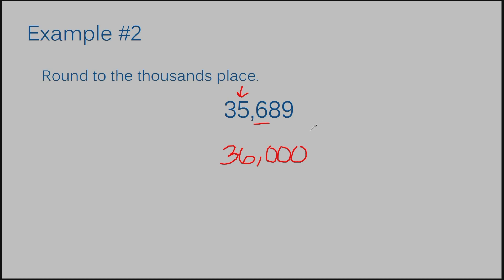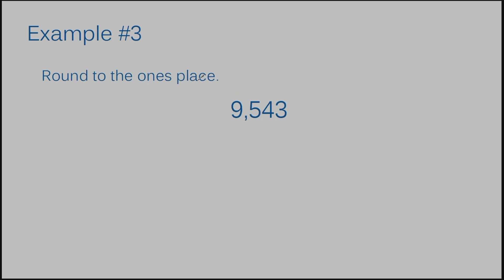Example number 3: round to the ones place. The ones place is the last digit when dealing with whole numbers. The rule is to check the space to the right — but there's nothing there. That means we do nothing. The answer to example number 3 is 9,543.